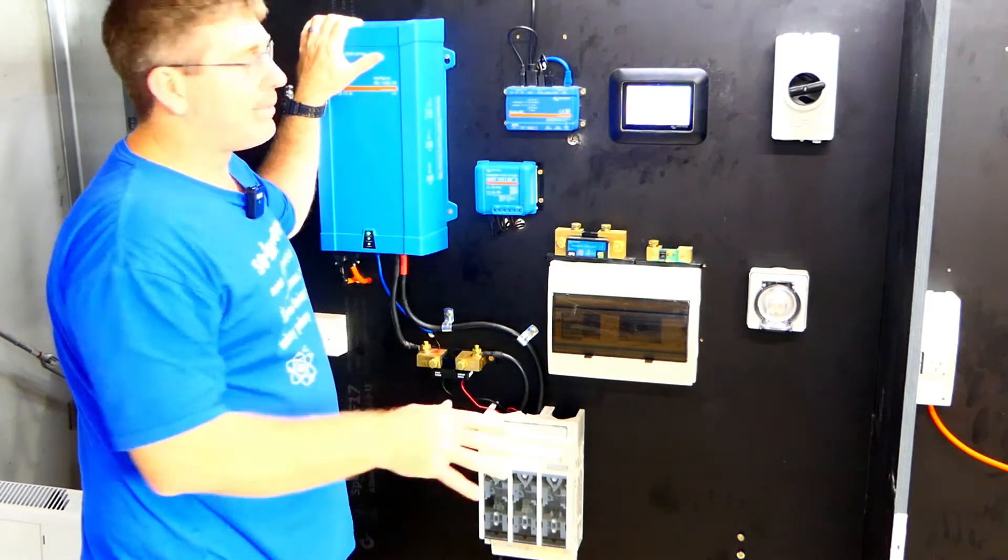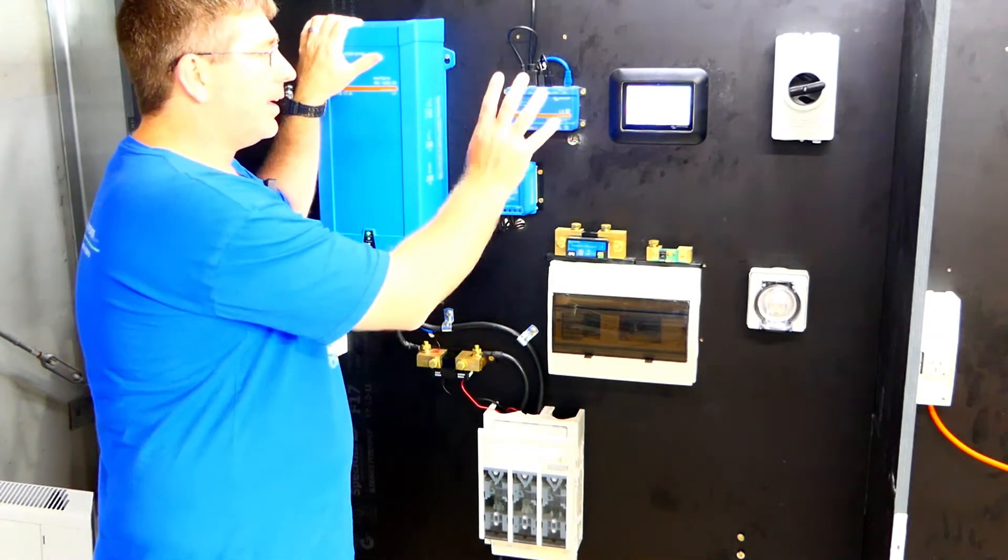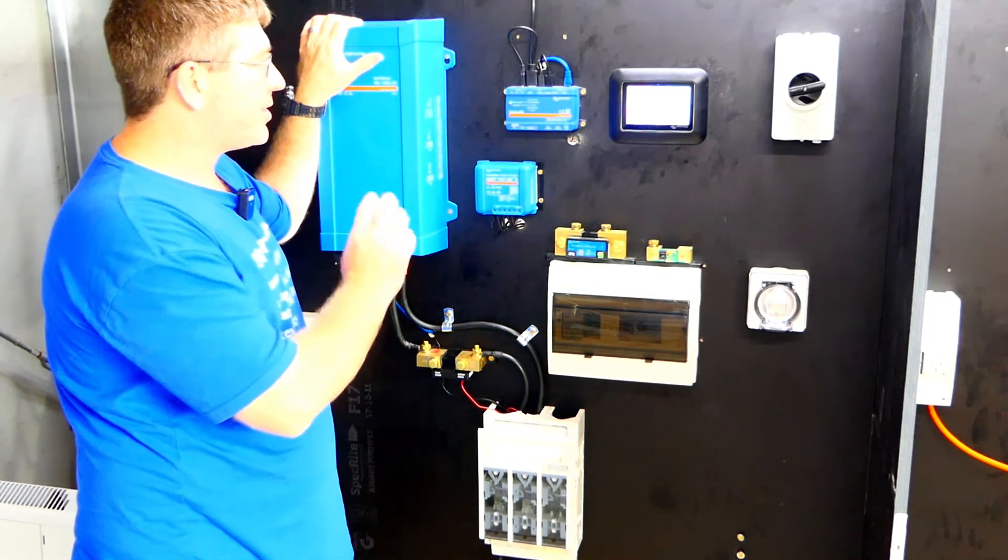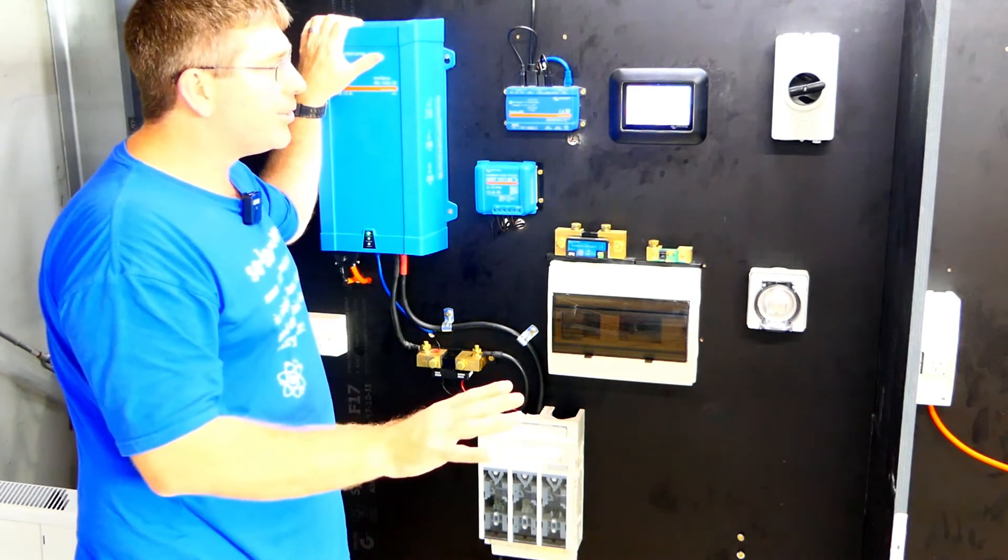And the other thing I'd highly recommend is get yourself a Victron battery monitor. Like I said, these few things are optional at the end. All you really want is a battery, a solar charge controller, and an inverter charger, and you're good to go.